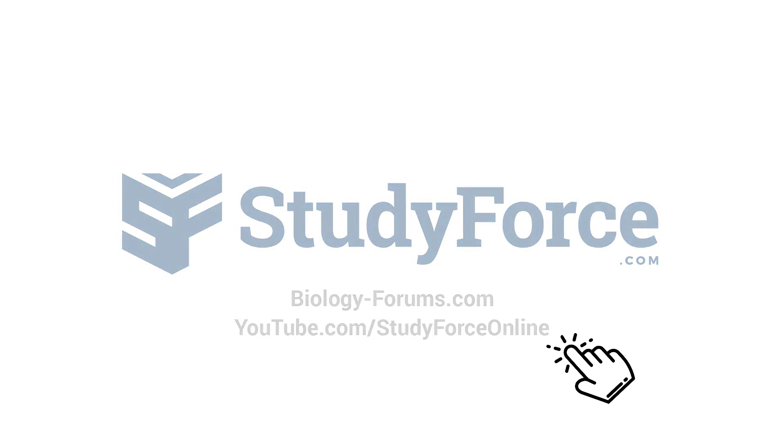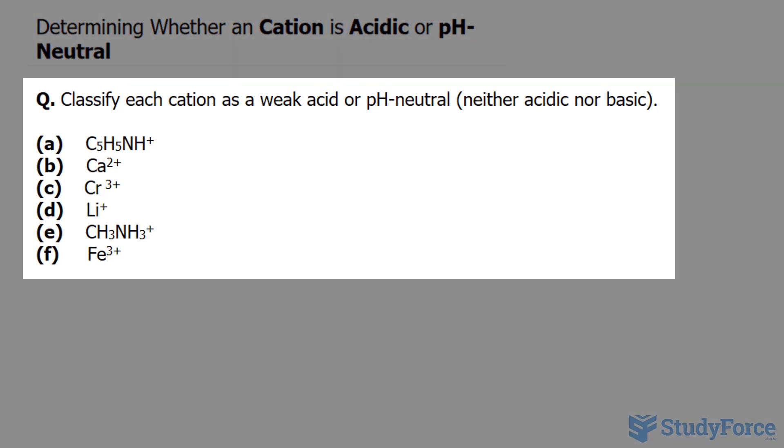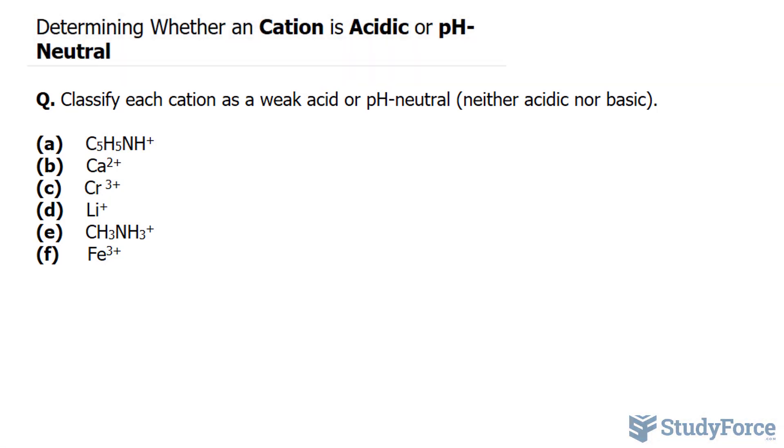Welcome back everyone. In this lesson we'll be determining whether a cation is acidic or pH neutral. The question reads, classify each cation as a weak acid or pH neutral. Remember what a cation is - it is an ion that has a positive charge.